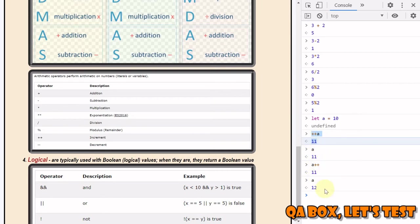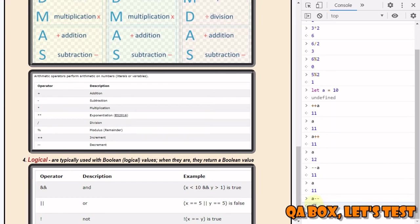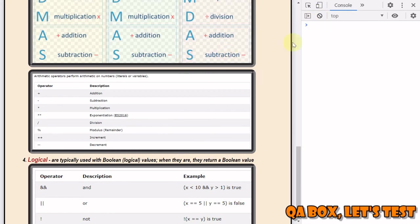Same is the case with pre-decrement and post-decrement. If I say pre-decrement a, you could see that it's reduced by one. If I say a now, it is 11. In case of post-decrement a--, you see 11, but if you check the value now it's decremented. So this is about arithmetic operators.